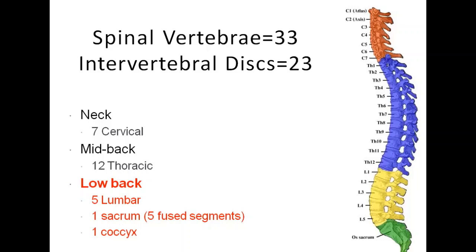The 33 vertebrae are divided into different segments: cervical, thoracic, lumbar, sacral, and coccygeal. The sacral and coccygeal segments contain exactly nine vertebrae, but they are in fused form. The sacrococcygeal complex forms the back wall of the pelvis. The sacrum and coccygeal vertebrae are fused, whereas the other segments — cervical, thoracic, and lumbar — are non-fused. In total, there are 33 vertebrae.